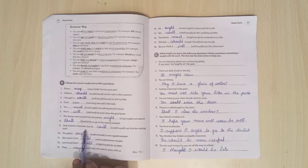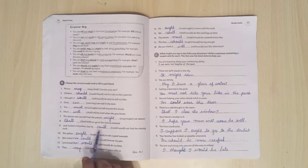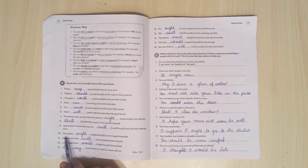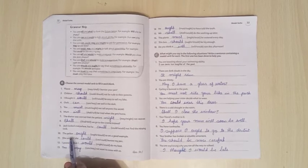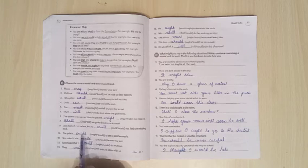Jack looked everywhere, but he could not find the missing socks. Could will be used here to talk about the possibility. In tenth, the police ought to set a good example. Ought will be used here because something is advisable.